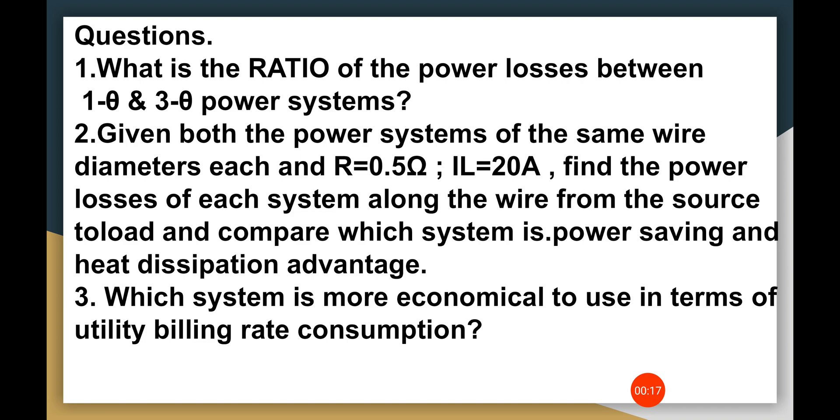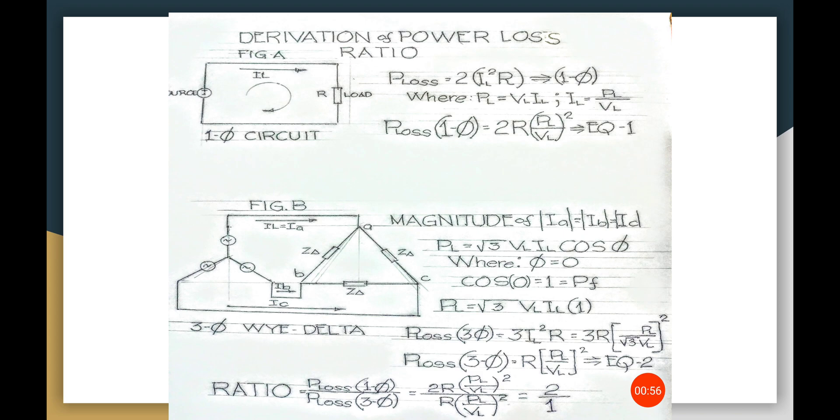Okay, we have three questions here. First, what is the ratio of the power losses between single phase and three phase power systems? Second, given both power systems use the same wire diameters, R equals 0.5 ohms, line current IL equals 20A, find the power losses of each system along the wire from source to load and compare which system is power saving and has heat dissipation advantage. Third, which system is more economical to use in terms of utility billing rate, single phase or three phase?